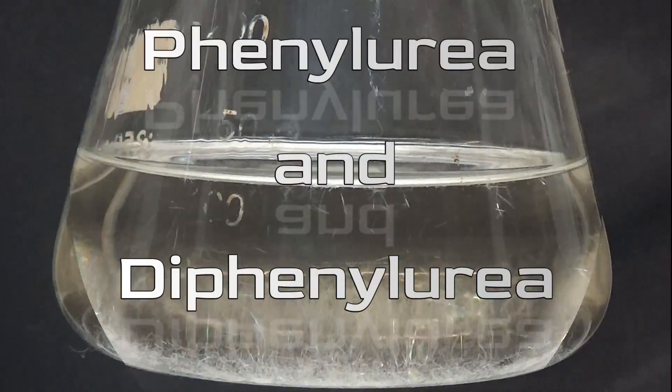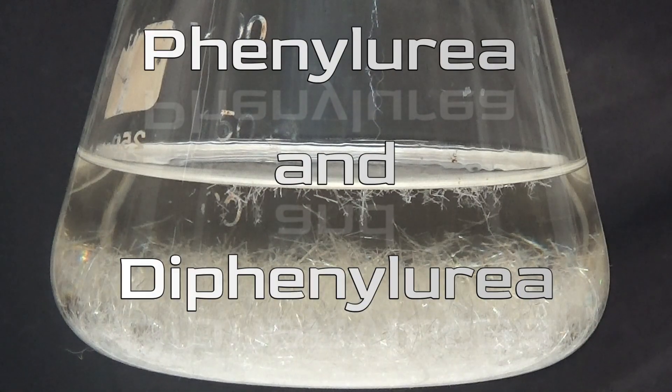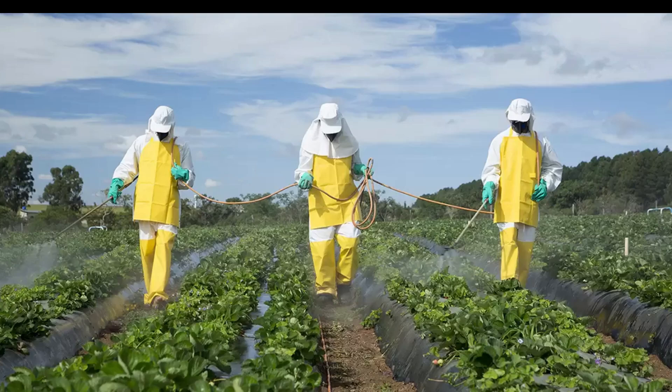In this video, we will learn how to obtain phenylurea and diphenylurea using the same process. Phenylurea belongs to the group of herbicides.